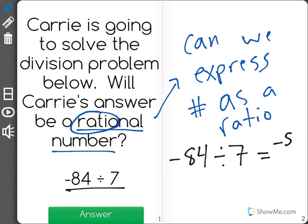So negative 84 divided by 7 is the same as writing negative 84 over 7. So right here we actually have a ratio because a ratio can be written in the same exact format. So the answer is yes.